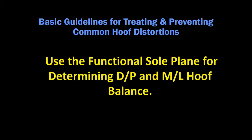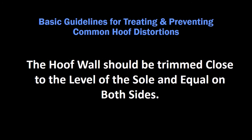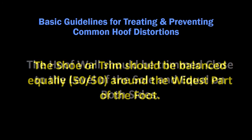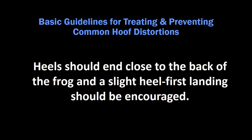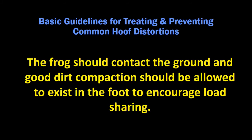Basic guidelines for treating and preventing common hoof distortions: Use the functional sole plane for determining dorsal-palmar and medial-lateral hoof balance. The hoof wall should be trimmed close to the level of the sole and equal on both sides. The shoe or trim should be balanced equally 50-50 around the widest part or center of the foot. Heels should end close to the back of the frog and a slight heel-first landing should be encouraged. The frog should contact the ground and good dirt compaction should be allowed to exist in the foot to encourage load sharing.